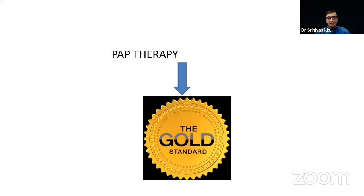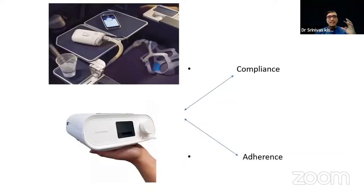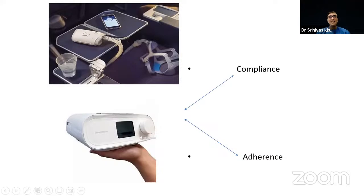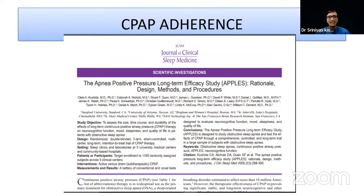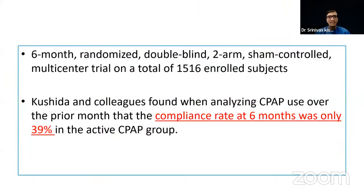PAP therapy is the gold standard in management. The biggest problem — whether it is the AirSense or the DreamStation by Philips — no matter how sleek the device looks, compliance and treatment adherence is one of the biggest issues. Adherence is a dismal 39% at the end of six months. And trends of CPAP adherence from 1996 to 2010–2011 show adherence has remained at 40–50% throughout.